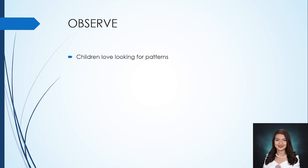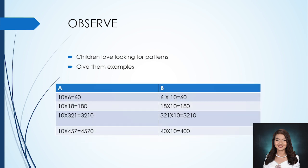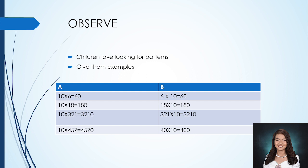Children love looking for patterns. When given a lot of examples, it is natural for them to look for similarities and assume rules. The key is to give them examples to observe. These examples must be well thought out so that the students would eventually arrive at a complete rule. To discover the rule in multiplying by powers of 10, we have here set A and set B. It is better to use the examples in set B than those in set A.